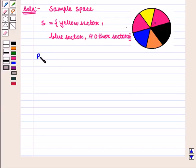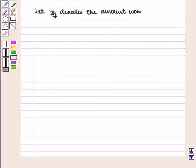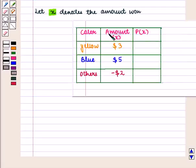Now let us draw a probability distribution table for a single spin of the spinner and the amount won. Let small x denote the amount won. So here, in the probability distribution table, we have taken color in the first column, the amount which is given by small x in the second column, and the probability values in the third column.